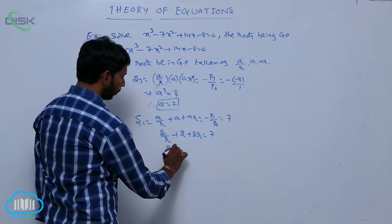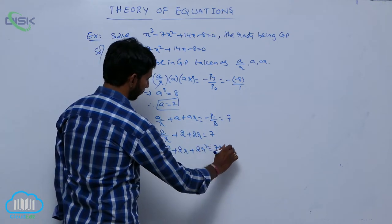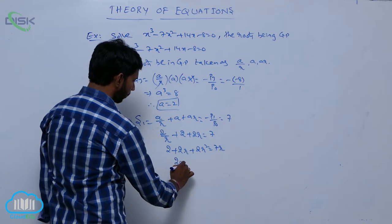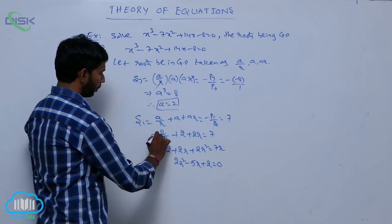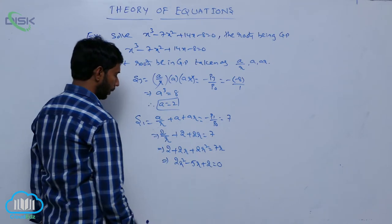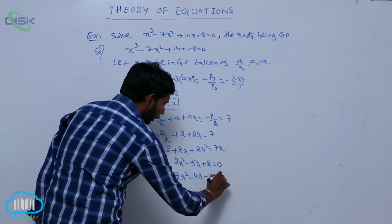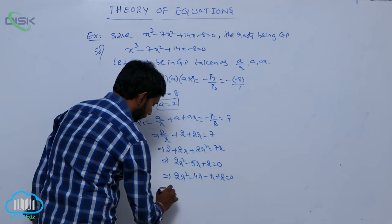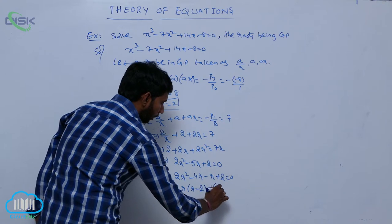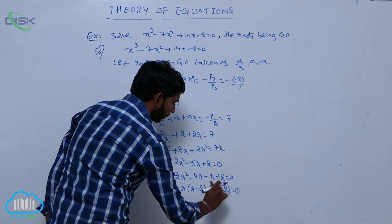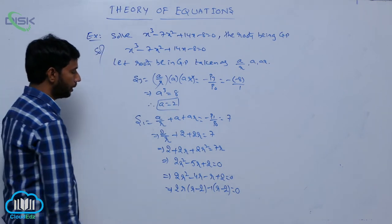Taking LCM: 2 + 2r + 2r² = 7r. That gives 2r² - 5r + 2 = 0. Factoring: (2r - 1)(r - 2) = 0, so r = 2 or r = 1/2.